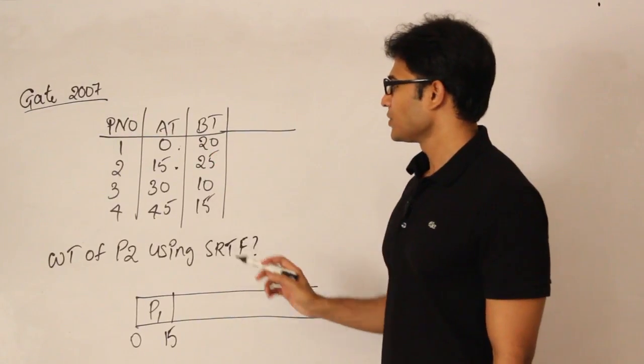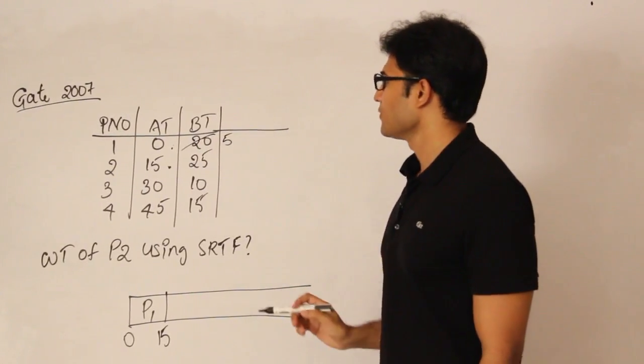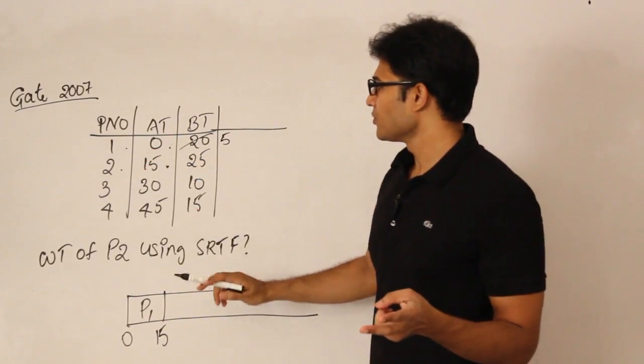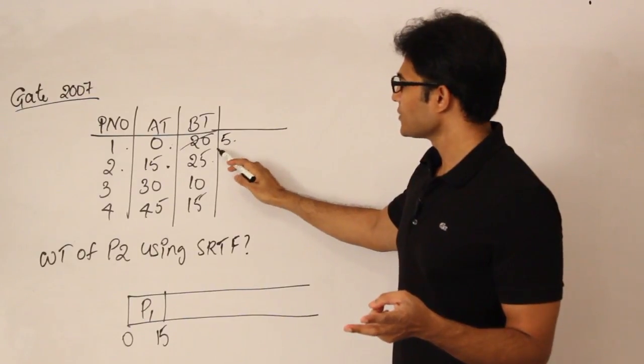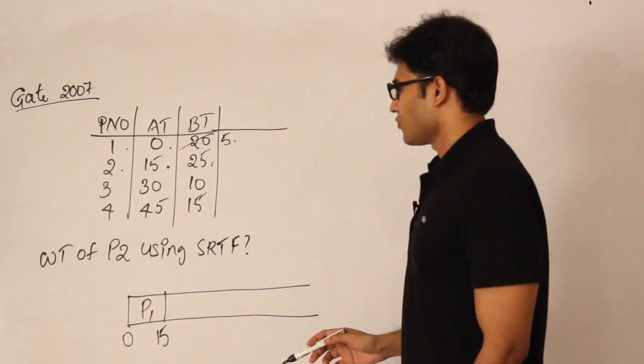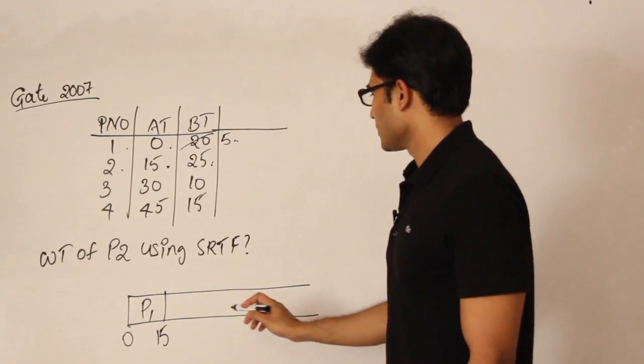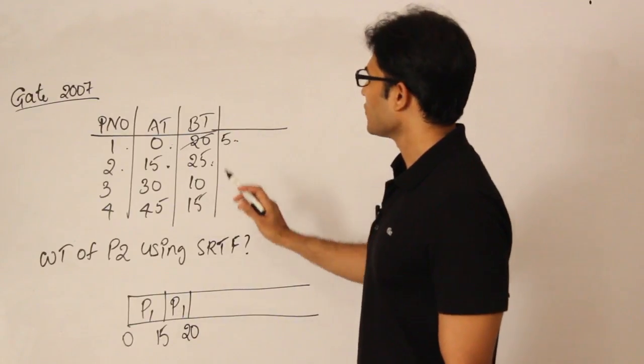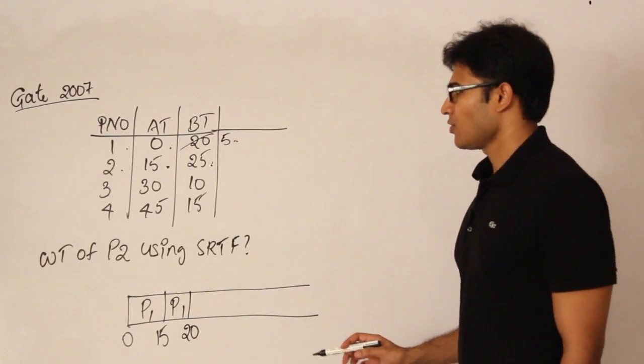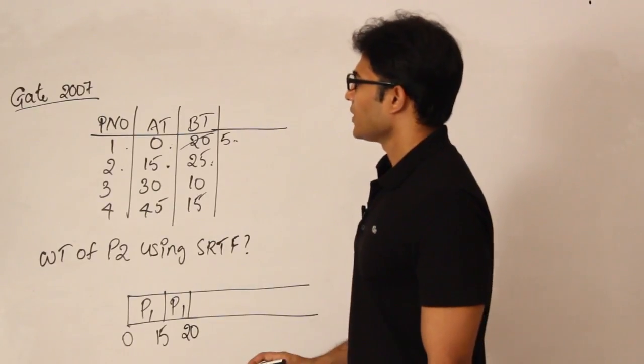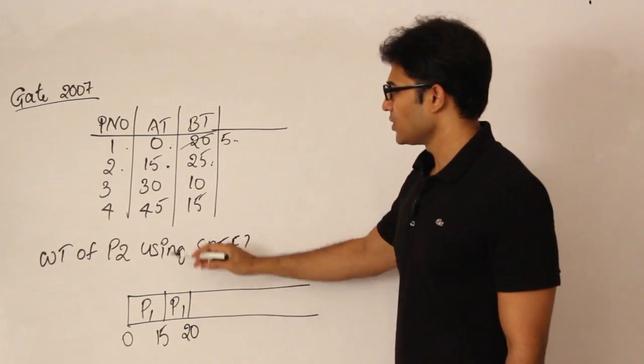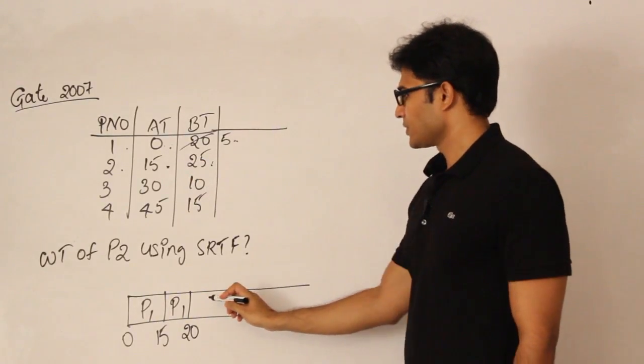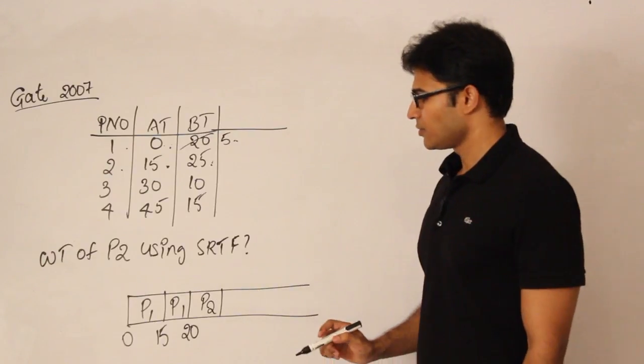Next process is arriving at 15. Now by that time I have executed this for 15 units. Therefore what is the remaining time for P1? 5. And now compare it. Now I have two processes available. One is P1, other is P2. And then both the burst times required are one is 5 and other is 25. Therefore we are going to continue with P1. P1, it requires 5 more. Therefore 20 and P1 is over now. Now what is the time? 20 and now P1 is over. So only one more process is available, by the time 20.